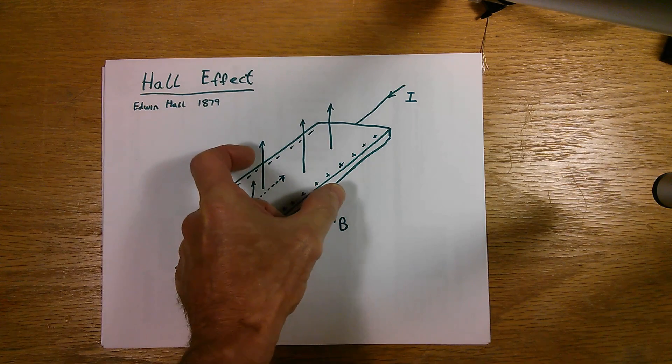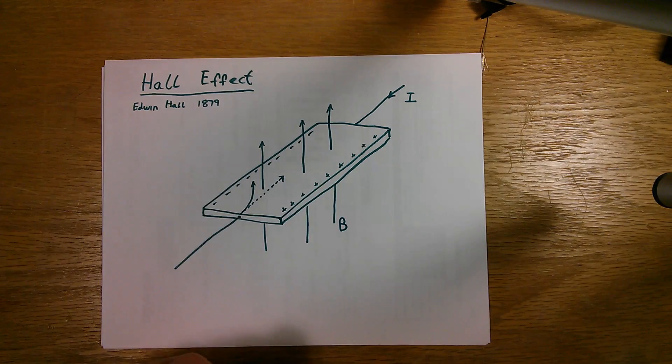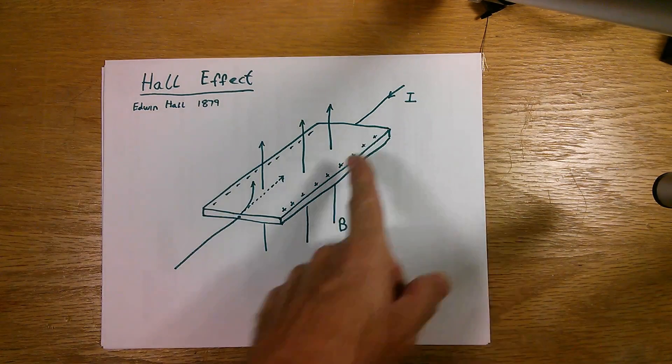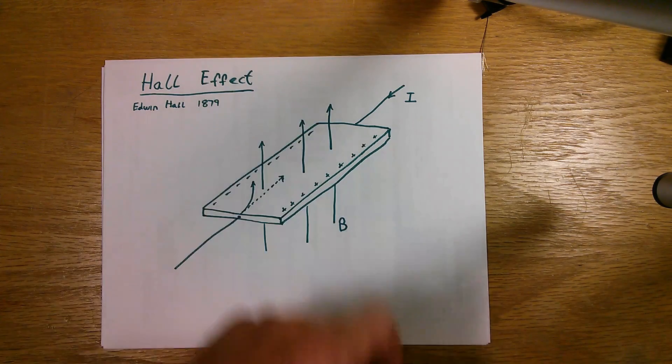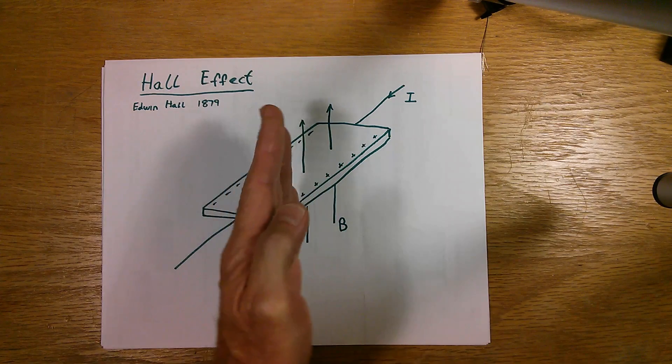So if you were to take a voltmeter and measure the voltage across here, you would get a voltage. And that voltage will be proportional to the current flowing through the device and the strength of the magnetic field, also the direction the magnetic field is pointing.